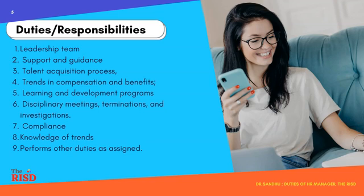Point five: the HR Manager creates learning and development programs. Learning and development programs are essential and all organizations should be learning organizations to meet their objectives. Point six: he oversees employee disciplinary meetings, terminations, and investigations. There are labor unions within the company with demands, and the HR Manager will listen to them and settle disputes for smooth operations.